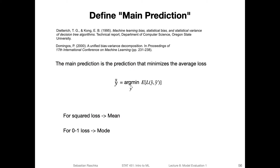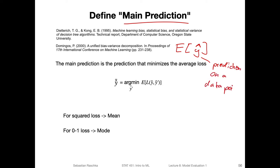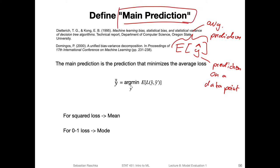Now we are introducing a new term called the main prediction. The main prediction is nothing really new — it's just the average prediction, the expectation of y-hat. So y-hat is the prediction on a data point, and if we consider all the different training sets that our models have been fit to, the average prediction across those different training sets is what we call the main prediction.